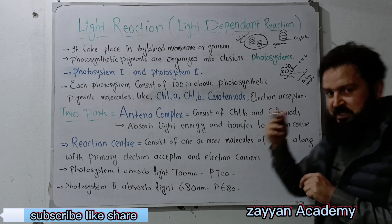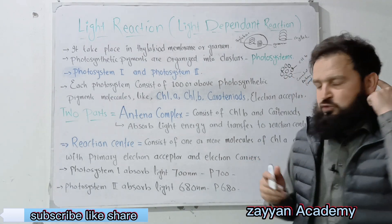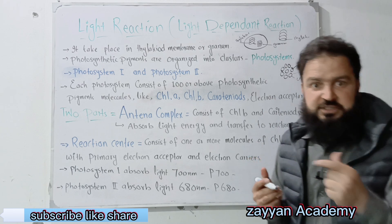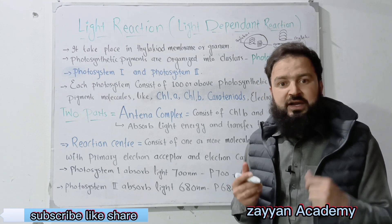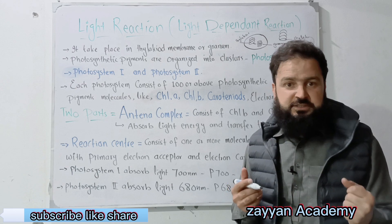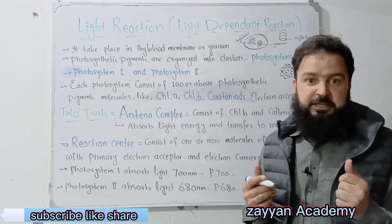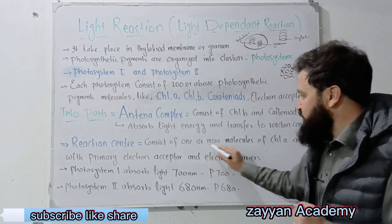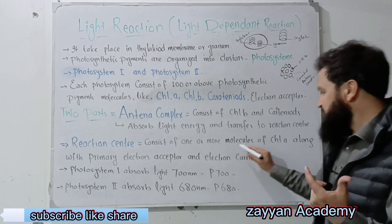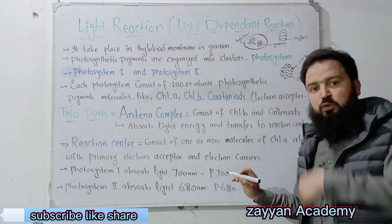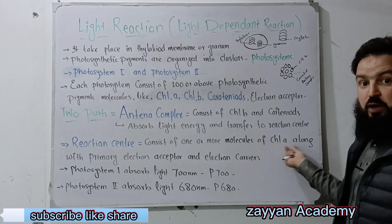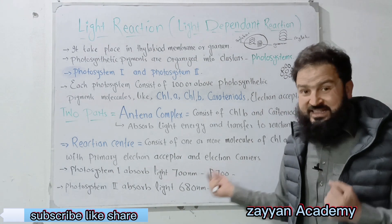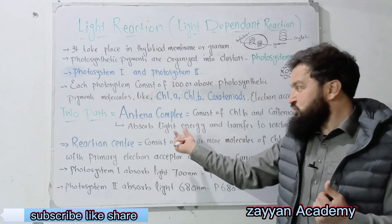The reaction center is responsible for absorbing light energy and transferring it to the reaction center. The reaction center is a chlorophyll A molecule. It is called a reaction center because it converts light energy into chemical energy. The reaction center consists of one or more molecules of chlorophyll A along with a primary electron acceptor and electron carriers.